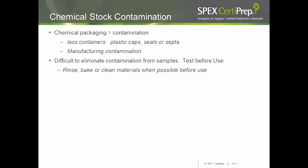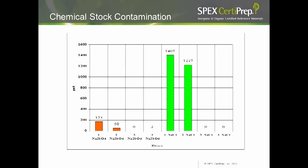A lot of packaging from raw material manufacturers has the potential to be contaminated. Glass containers give sodium and boron, plastic caps, seals, or septa can have phthalates, and there can be manufacturing contamination. Often you need to test starting materials before you use them, and when possible you can clean, rinse, or bake them. We did a small study on sodium sulfate and sodium chloride from our laboratory: after the first solvent rinse, our sodium chloride had 1,400 ppb of phthalates; after the second rinse, 1,200 ppb; after baking in a kiln oven, the phthalate content was reduced to non-existent.